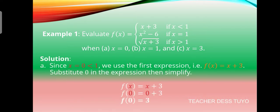For our solution: since x = 0 is less than 1, we use the first expression f(x) = x + 3. We substitute 0 into the expression and simplify. Our given is f(x) = x + 3, so f(0) = 0 + 3, therefore f(0) = 3.